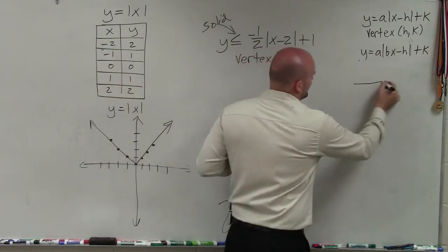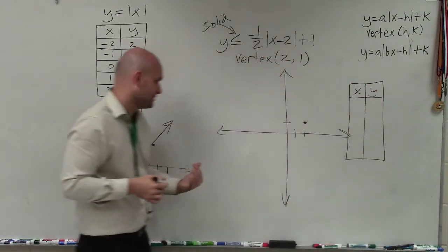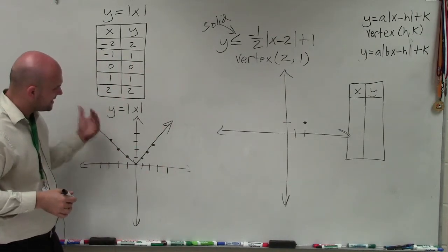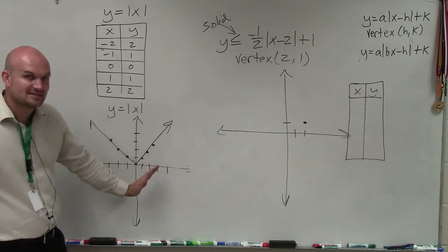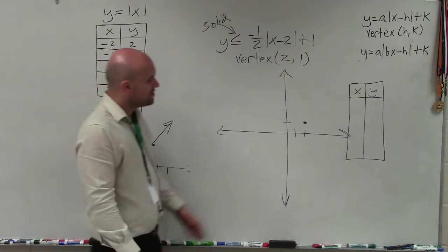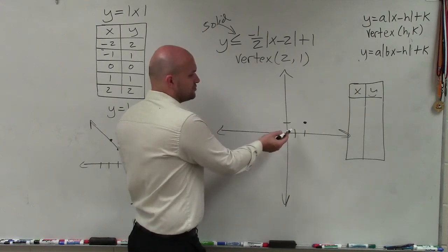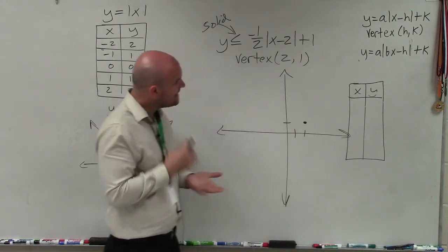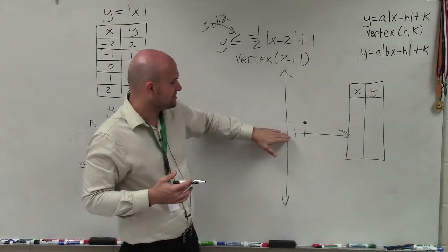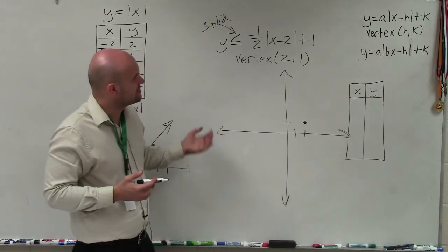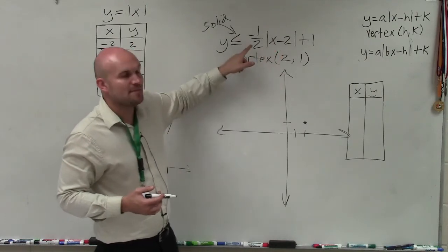When creating a table of values, what's nice about the absolute value equation is it has a line of symmetry. Meaning, if I graph points to the left, I can just reflect them over my axis of symmetry, which goes to my vertex, and have the exact same point on the right hand side. So I want to choose points either to the left or to the right. For this case, it'd be easiest to choose points that are to the left. I want to choose points that when I find out the absolute value and multiply them by 1/2, I'm going to get an integer.